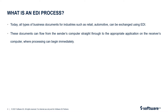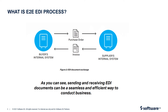EDI process is where these documents flow from the sender's computer straight through to the appropriate application on the receiver's computer, where processing can begin immediately with a fully integrated EDI system. A purchase order is being sent from the buyer's internal system to the supplier's internal system. As and when the supplier's internal system receives the purchase order, it sends out an invoice to the buyer's internal system. This entire process of receiving and sending appropriate documents from buyer to supplier and from supplier to the buyer is called an end-to-end EDI process.